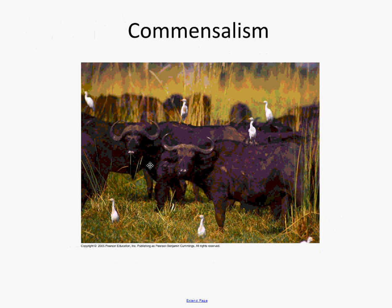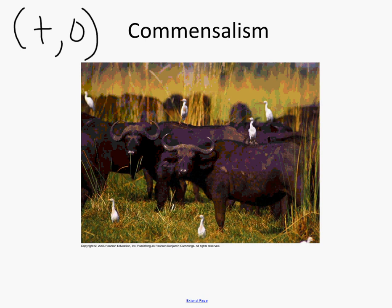Commensalism is the last type of relationship, and it's a plus-zero relationship — one organism receives a benefit while the other theoretically receives nothing. Cattle egrets are a great example: these birds ride on the backs of large herbivores. As the herbivore meanders through the grass eating, it stirs up bugs which the cattle egret eats. The large animal doesn't care about the gnats flying around it, but the bird loves them — so the bird benefits while the cow receives nothing, hence the plus-zero distinction.